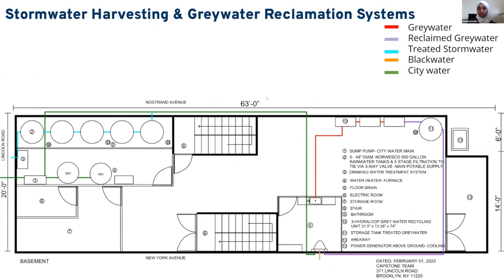Next we have the multi-family basement. Starting from the left, we have the sump pump and city water main, which feeds into every fixture as our backup plan. We also have stormwater collection from the roof via gutters, shown as the cyan line, which is tied into the city water line. Towards the back of the building, we have three water treatment fixtures, where water from the sink enters the red path and is sent to the toilet via the lavender line.